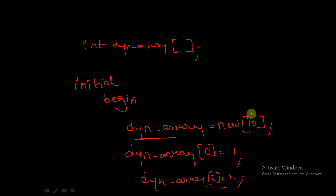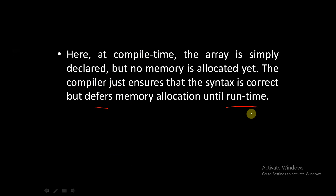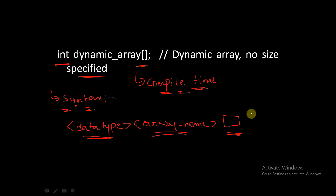We will continue with the discussion on dynamic arrays. In the previous session, we started with dynamic arrays — what they are and the difference between dynamic arrays, packed arrays, and unpacked arrays. We saw that in dynamic arrays, memory allocation takes place during runtime, whereas in packed and unpacked arrays, memory allocation takes place at compile time.